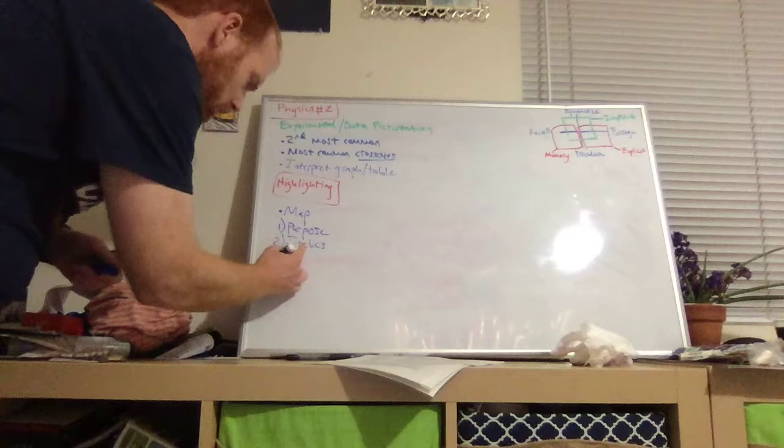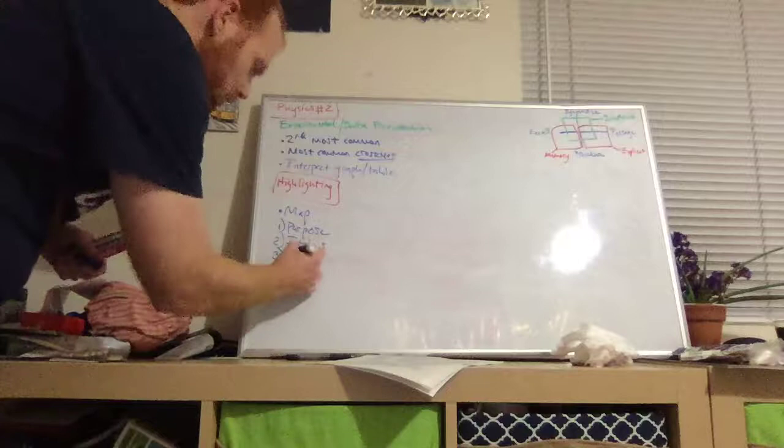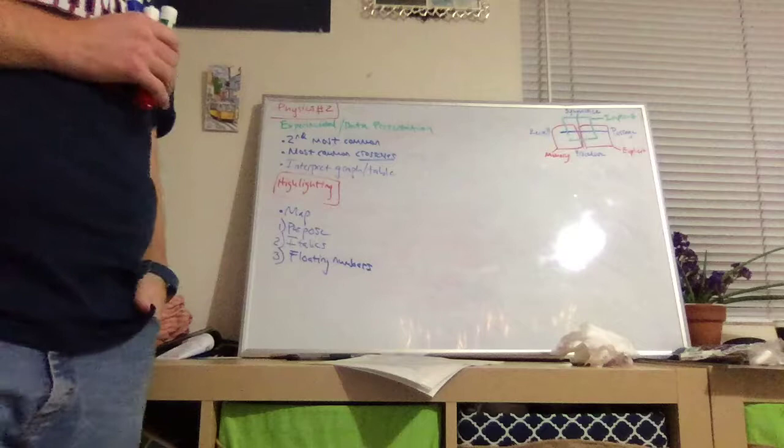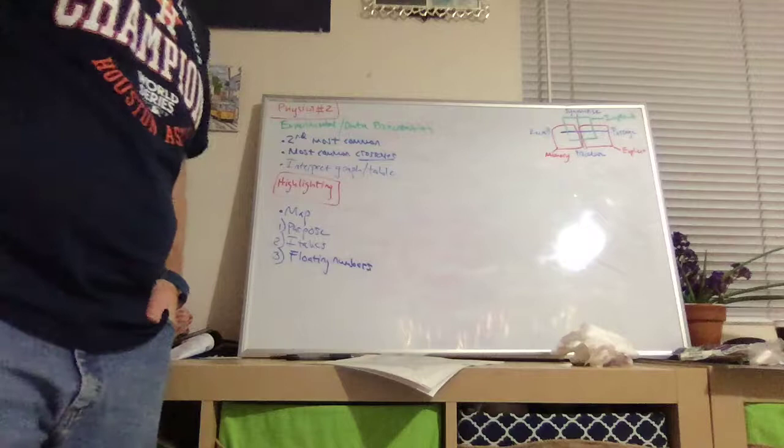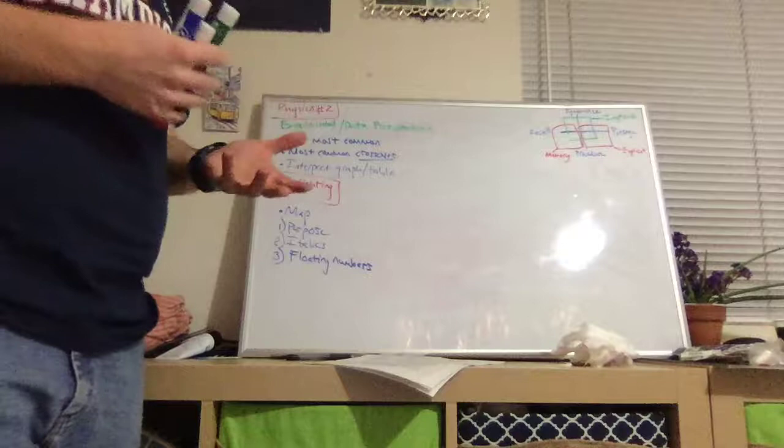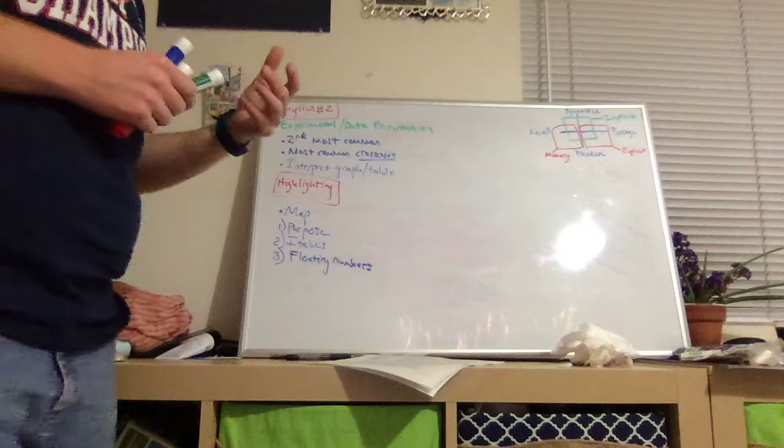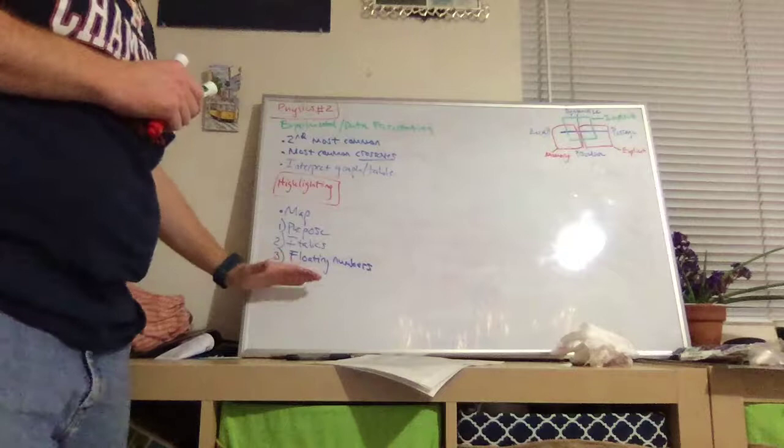A third thing that would be important to highlight as you're building your map are examples of what we call floating numbers. Now that doesn't mean that they're hovering over the page. What do you think I mean by floating numbers? Bobby, what do you think? Okay, so Bobby says floating numbers are just numbers embedded within the text. And that's exactly right. So those numbers could be used to solve equations. For example, they could be actually floating numbers of data if they didn't use a table or a graph. So any kind of floating numbers, we want to be aware of them and we want to highlight them.